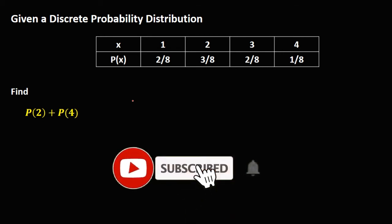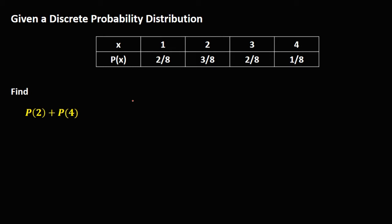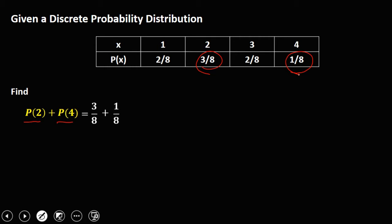Okay, so let's have this problem. Given a discrete probability distribution, find the sum of P(2) and P(4). In the distribution, P(2) is 3 over 8, plus P(4), that's 1 over 8. Adding the numerators: 3 plus 1 is 4 over 8. Reducing — divisible by 4 — so the probability of the sum of P(2) and P(4) is 1 half.